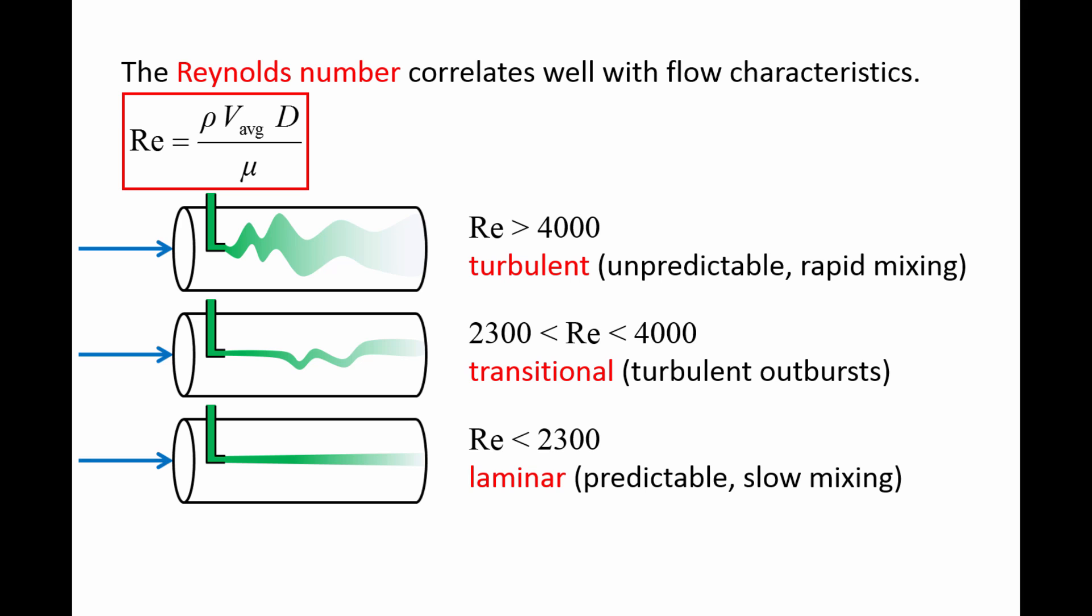For example, if great care is taken to not disturb the flow, it is possible to delay the onset of turbulence to Reynolds numbers that are much greater than 4000. However, under typical everyday conditions, the values of 2300 and 4000 are reasonable cutoff values.